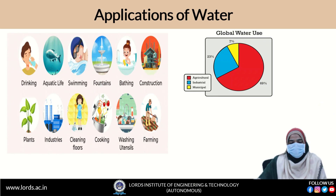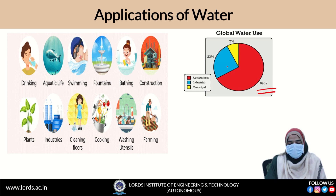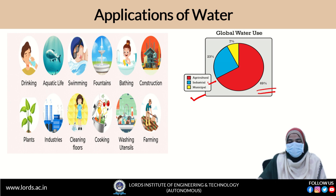Now we will see the applications. The global water usage can be categorized into three types: the first is agriculture, which accounts for 69%. Second, 23% of global water is used for industrial purposes, and 7% is used for municipal water supply.